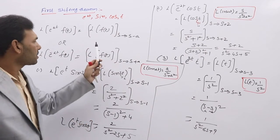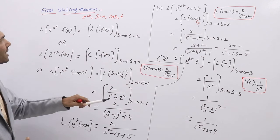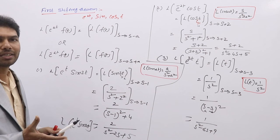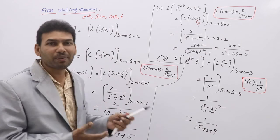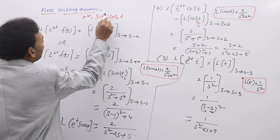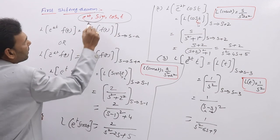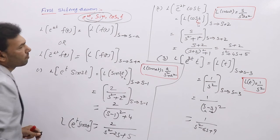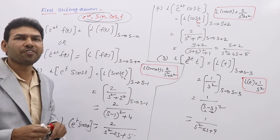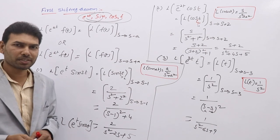These are the complete cases for the First Sifting Theorem. There may be many applications, but in every case you need to think about these functions only. If e^(at) is in product with sin, cos, t, or some other function, then apply the First Sifting Theorem. Any doubts, please ask.